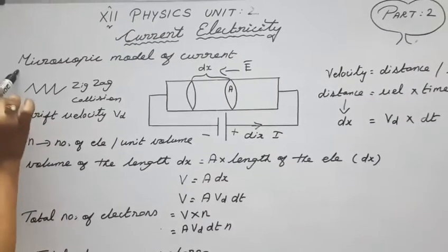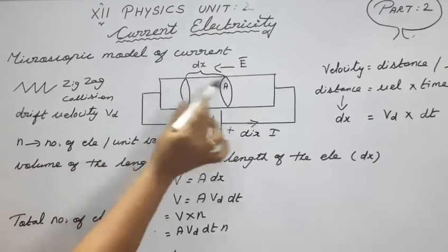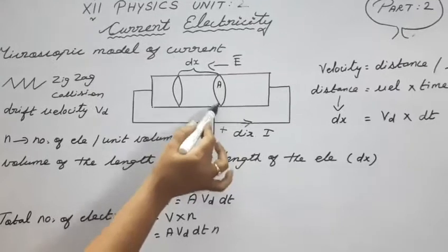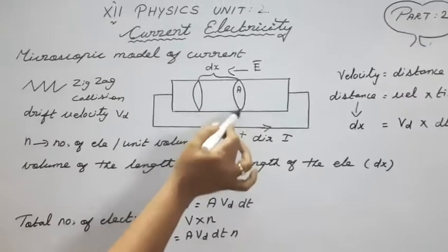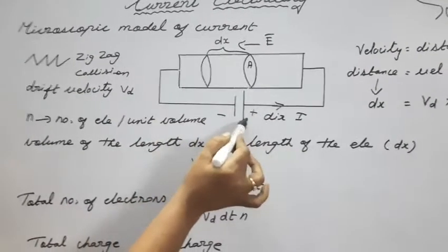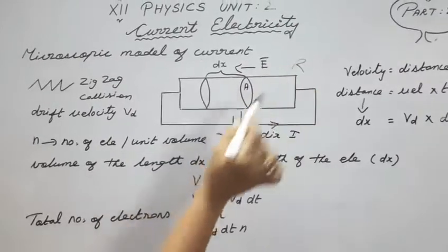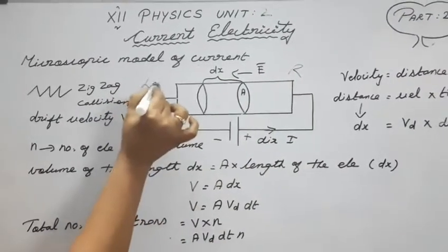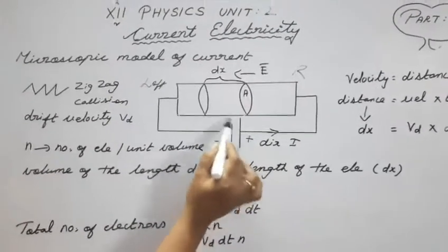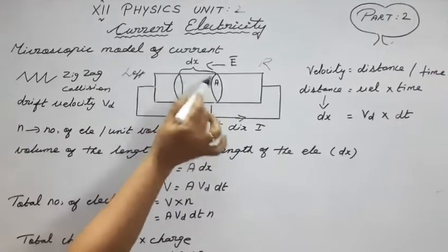Our next topic is the microscopic model of current. Here we take one conductor; the cross-sectional area of the conductor is A, and a battery is connected — the positive terminal to the right-hand side and the negative terminal to the left-hand side. We take one small element, and the distance of that small element to the cross-sectional area is dx.